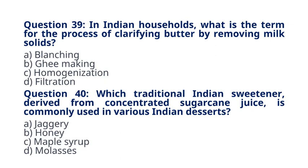Question 40. Which traditional Indian sweetener, derived from concentrated sugarcane juice, is commonly used in various Indian desserts? A. Jaggery. B. Honey. C. Maple syrup. D. Molasses. The correct answer to question 40 is option A. Jaggery. Explanation. Jaggery is a traditional sweetener in India, rich in minerals, and is often used in the preparation of sweets and desserts.